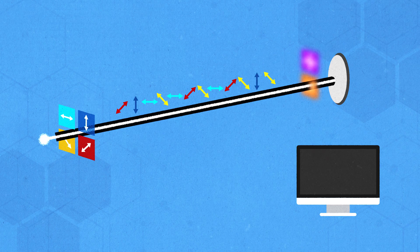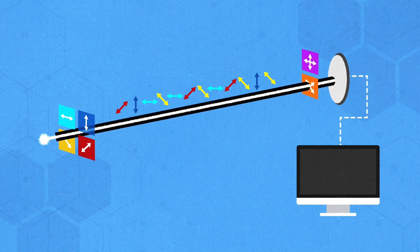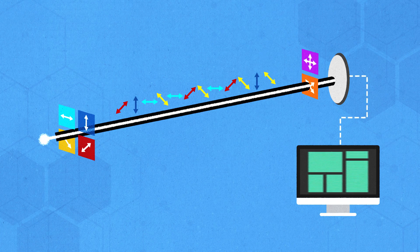Third, the encoded quantum signals are received and measured. These measurements are processed by traditional computers to extract the encrypted data in a raw or imperfect key. Fourth, a key distillation process uses traditional computing to apply error correction and other techniques to refine the raw key into a usable secret key and protect its secrecy. Any detectable errors in the communication that indicate potential eavesdropping alert the recipients and security team of a possible intrusion.